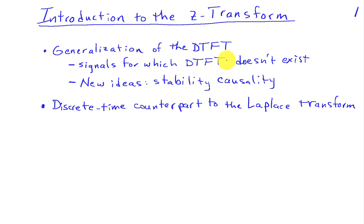it applies to signals for which the DTFT doesn't exist, thus allowing us to analyze those signals and allows us to look at some new ideas in the sense of a system with respect to stability and causality.